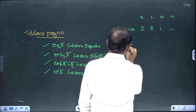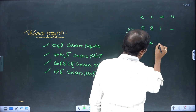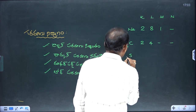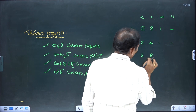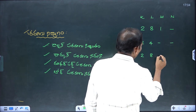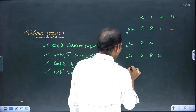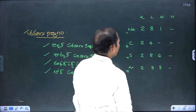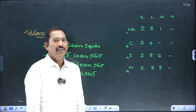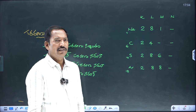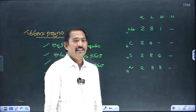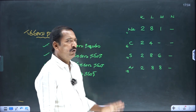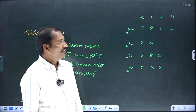Carbon has atomic number 6, configuration 2-4. Sulfur is 16, configuration 2-8-6. Nitrogen 7 is 2-5. Silicon (Si) is 14, configuration 2-8-4. Phosphorus is 2-8-5. These are the electron configurations for the first orbit and beyond.